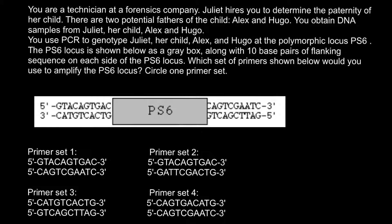Hello and welcome to Nikolai's genetics lessons. Today I have prepared another video about forensic genetics. Here is a problem: you are a technician at a forensic company. Juliet hires you to determine the paternity of her child. There are two potential fathers, Alex and Hugo. You obtain DNA samples from Juliet, her child, Alex and Hugo. You use PCR to genotype them at the polymorphic locus PS6, shown below as a grey box with 10 base pairs of flanking sequence on each side. Which set of primers shown below would you use to amplify the PS6 locus? Circle the one primer set.